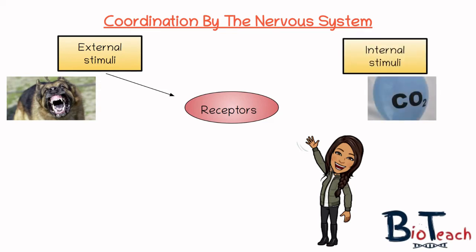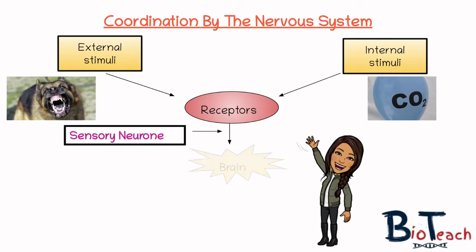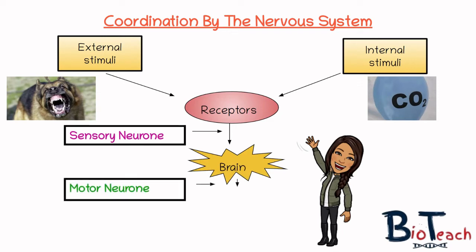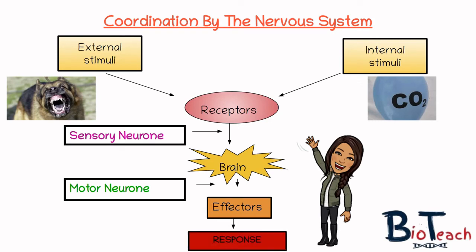You can also have internal stimuli — for example, a high concentration of CO2 in your blood, perhaps following exercise. This is also detected by receptors, and our sensory neurons can then send messages to our brain, which processes the impulses and coordinates a response via the motor neurons. This basically means impulses are sent down the motor neurons to bring about an appropriate response or action.